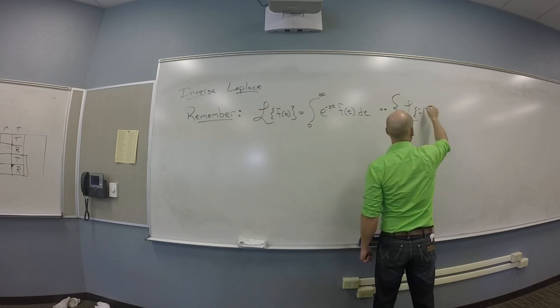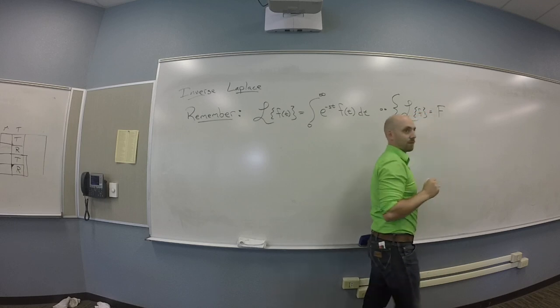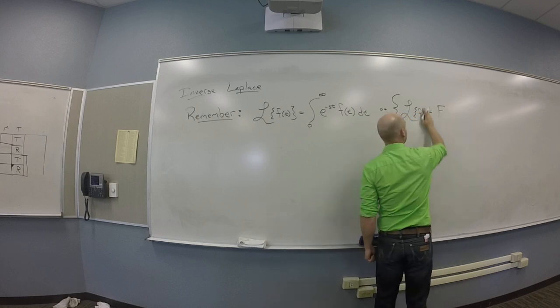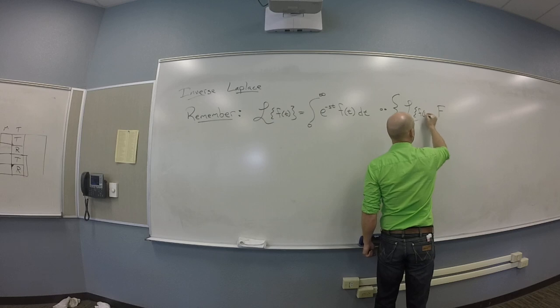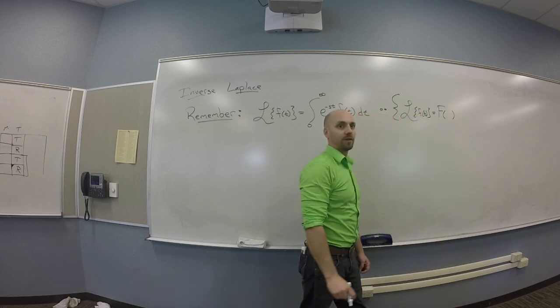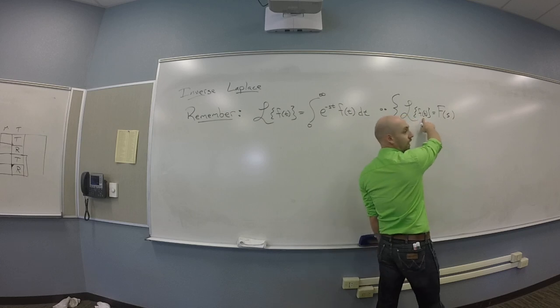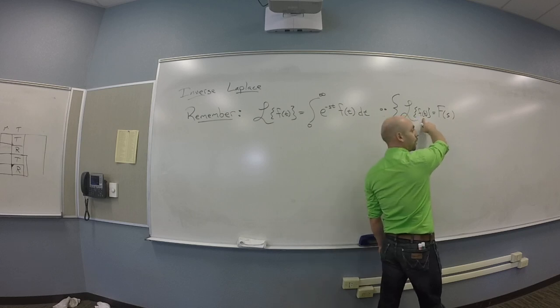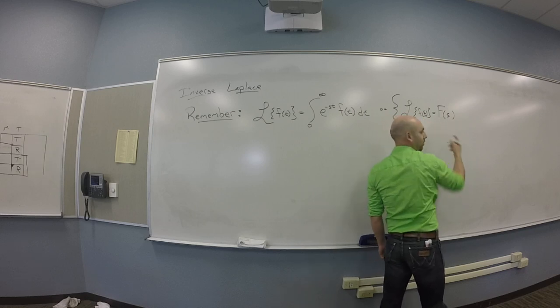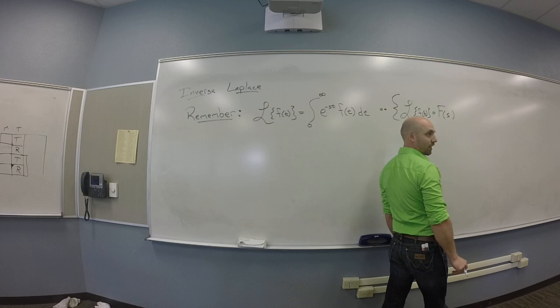You Laplace transform a function little f and you get a function big F. If I was being really precise about dependencies, that's a function little f of t and big F is a function of s. That's from time, like from a place about time to a place about whatever the hell s is. I kind of bounced off into magic land here.